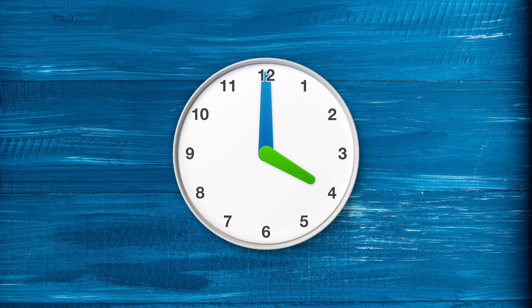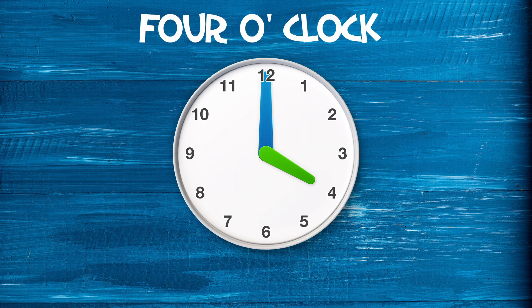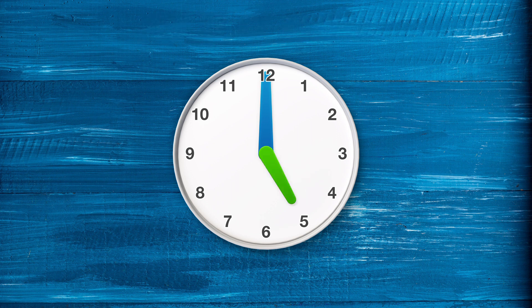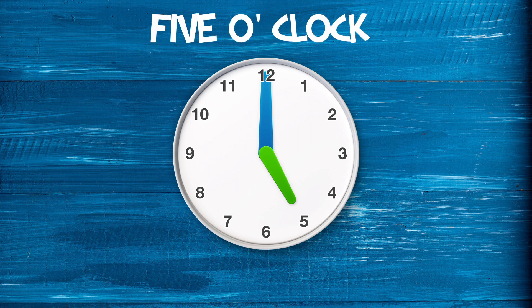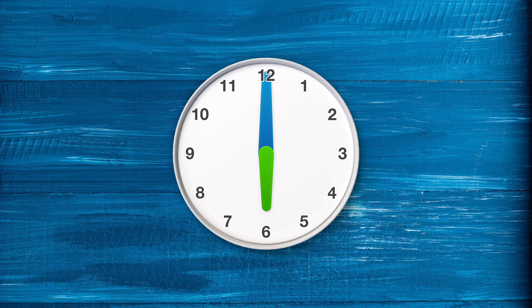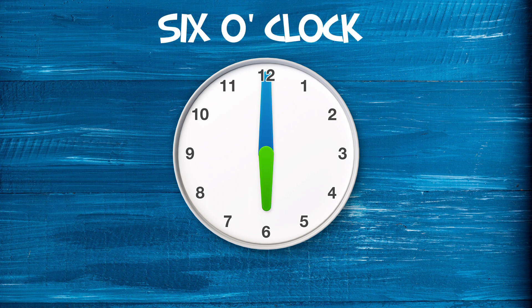When the small hand is in front of the number 4, it is 4 o'clock. When the small hand is in front of the number 5, it is 5 o'clock. When the small hand is in front of the number 6, it is 6 o'clock.